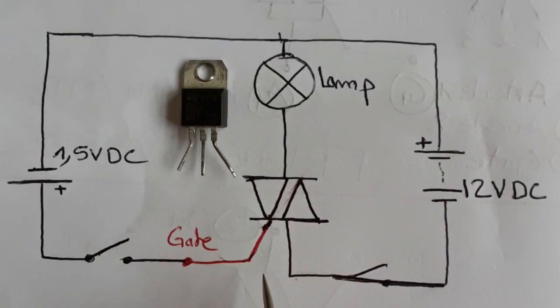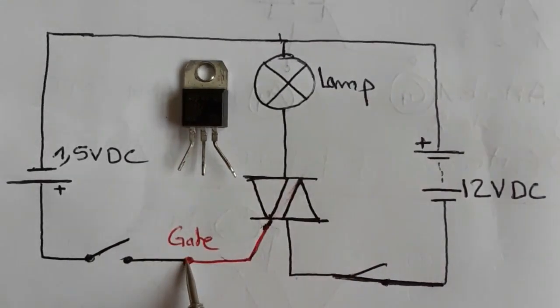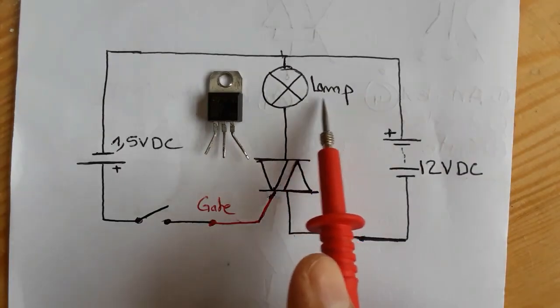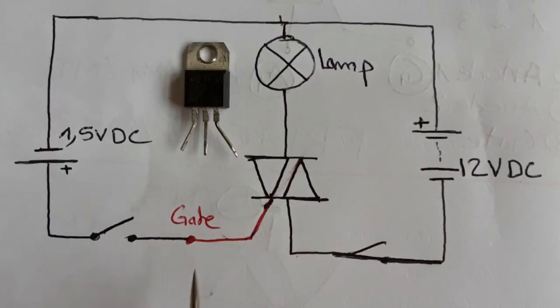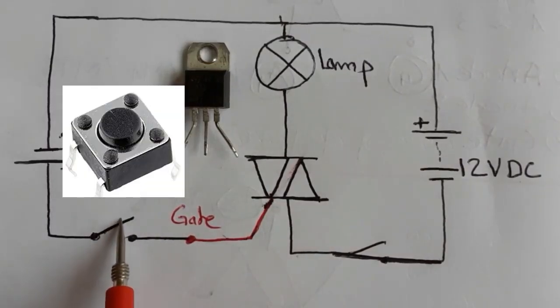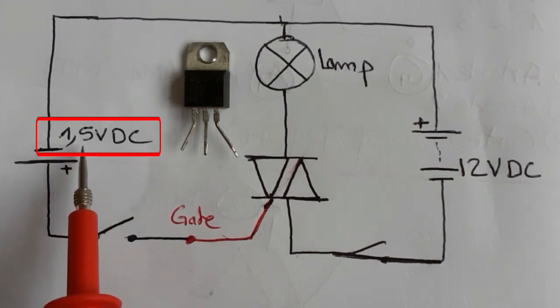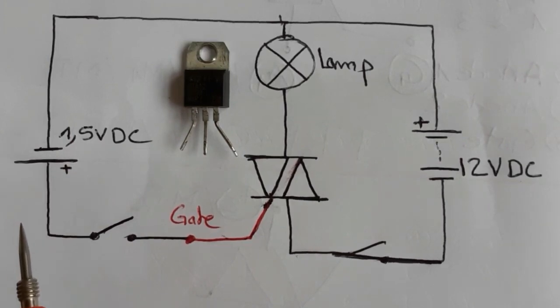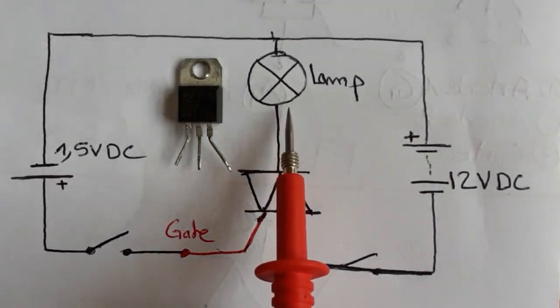So, basically, this is the TRIAC. As you can see, it contains three terminals. And, here, we have a lamp. And, here, this is the DC voltage, 12-volt DC voltage. And, over here, the gate is connected to a switch and to a control signal. We have 1.5 volt DC. This is a control signal. So, now, the switch is open. The lamp is off.